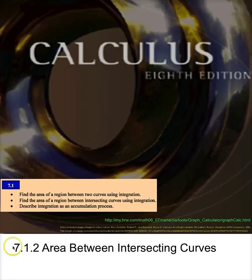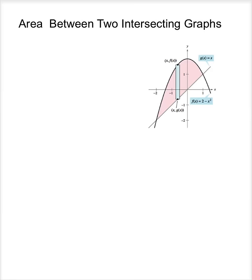Sometimes you're simply told to find the area between two intersecting curves. So suppose you're given the function f of x is equal to 2 minus x squared, and g of x is equal to x. Well, of course the first thing you do is you draw your curves.